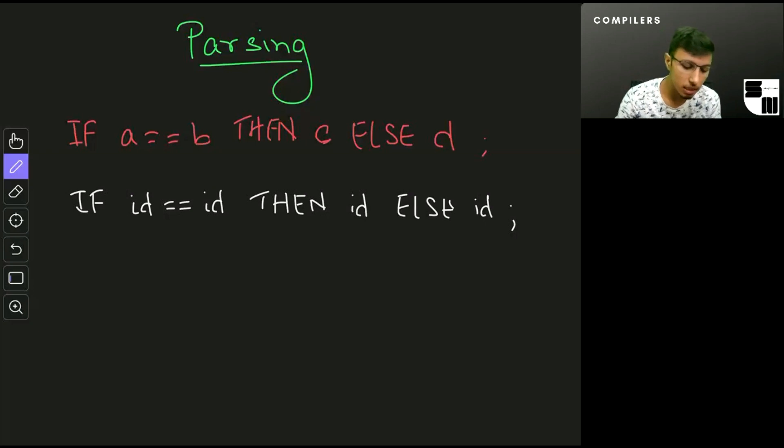The parse tree would look something like this: we would have IF-THEN-ELSE that's the root of our tree, and this will have three parts. The first one is going to be the IF part, the second is going to be the THEN part, and the third is going to be the ELSE part.